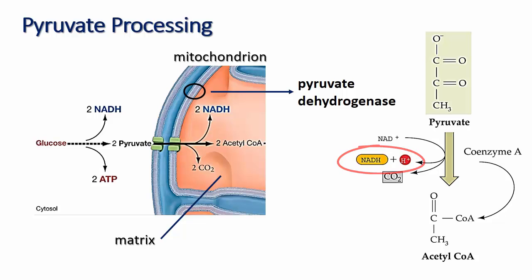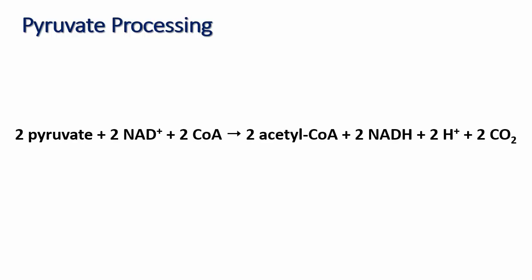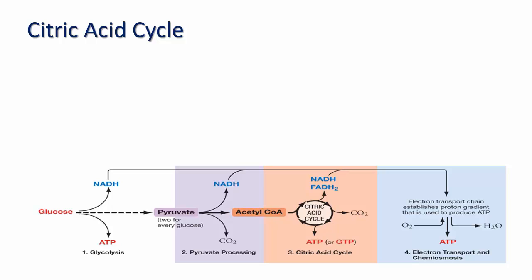Electrons lost by one pyruvate molecule are transferred to one molecule of NAD+, resulting in the formation of NADH + H+. The overall reaction of pyruvate processing per molecule of glucose is: 2 pyruvate + 2 NAD+ + 2 Coenzyme A give 2 acetyl-CoA + 2 NADH + 2 H+ + 2 CO2, since each glucose molecule produces two pyruvate molecules in glycolysis.